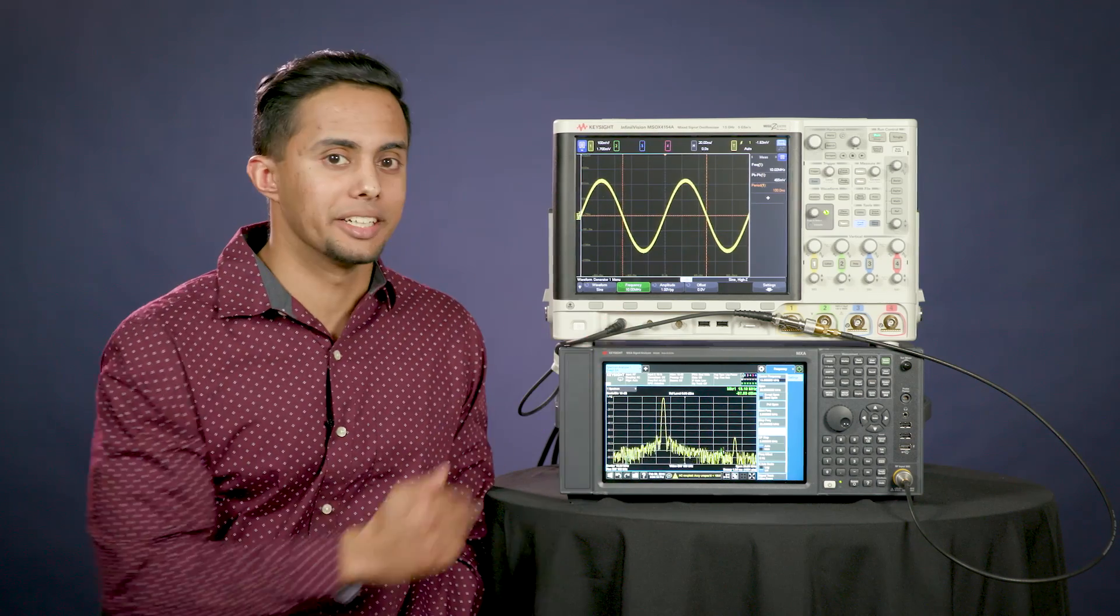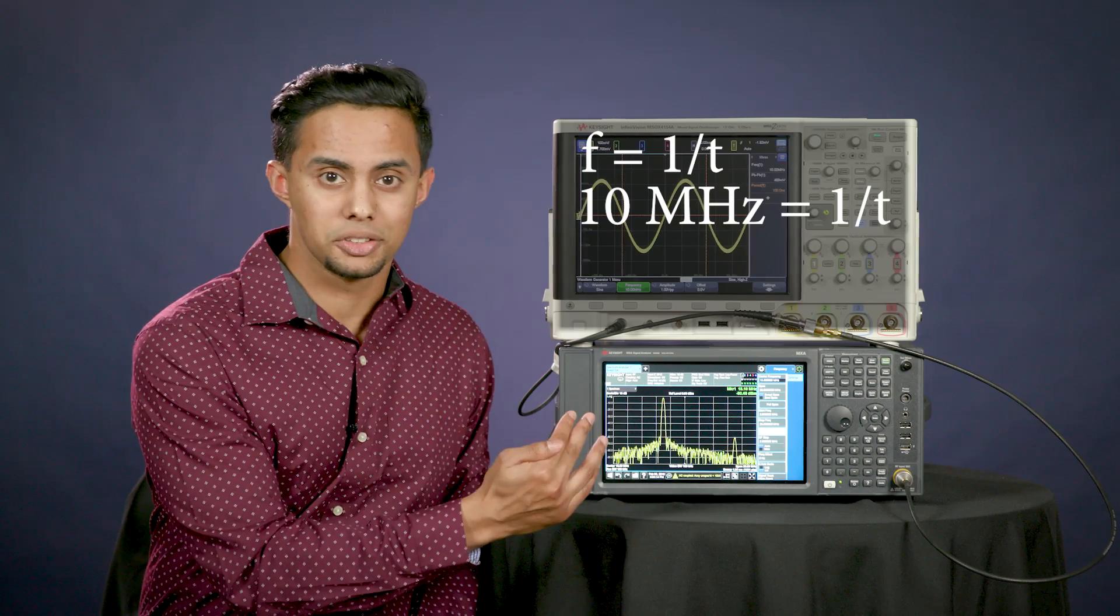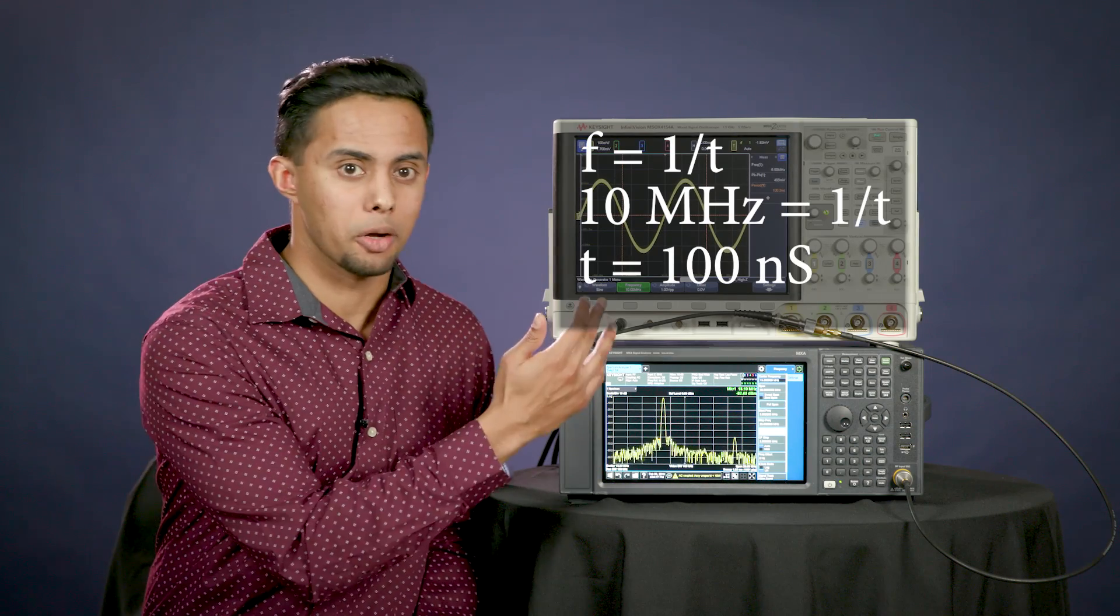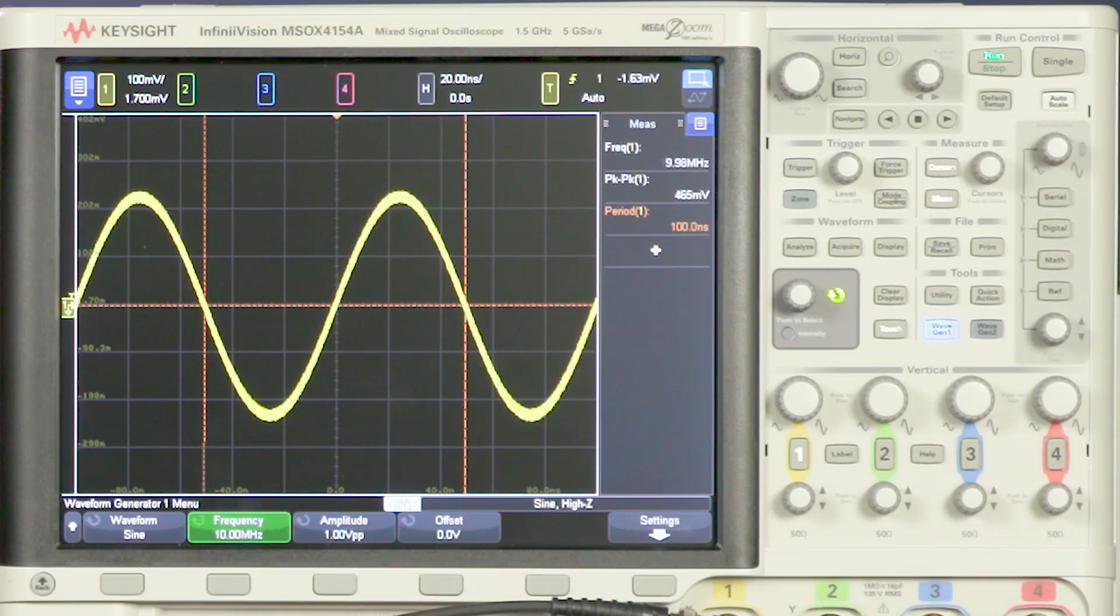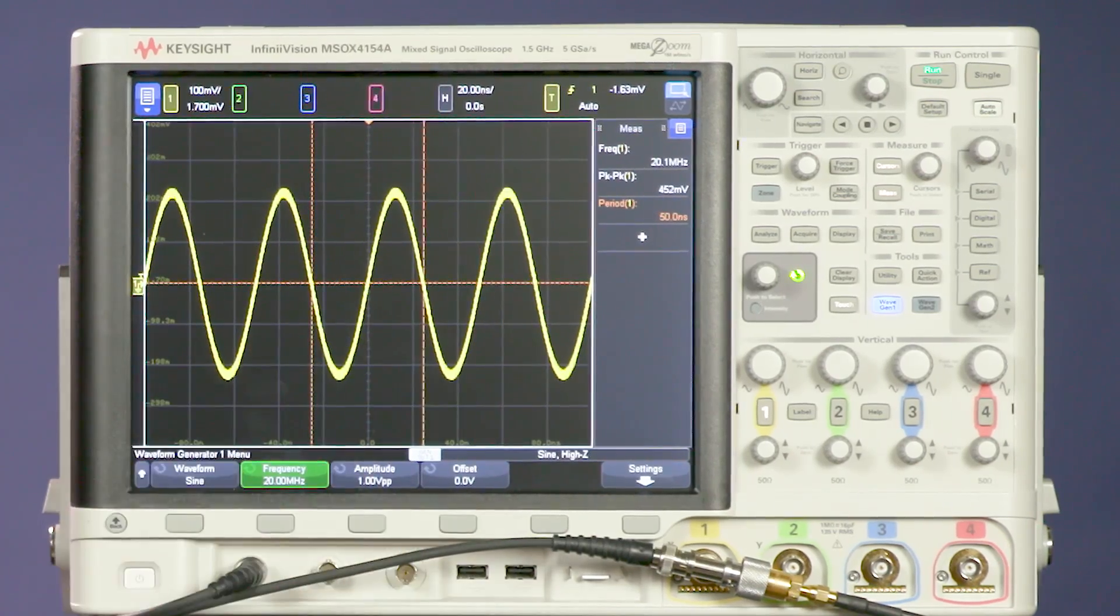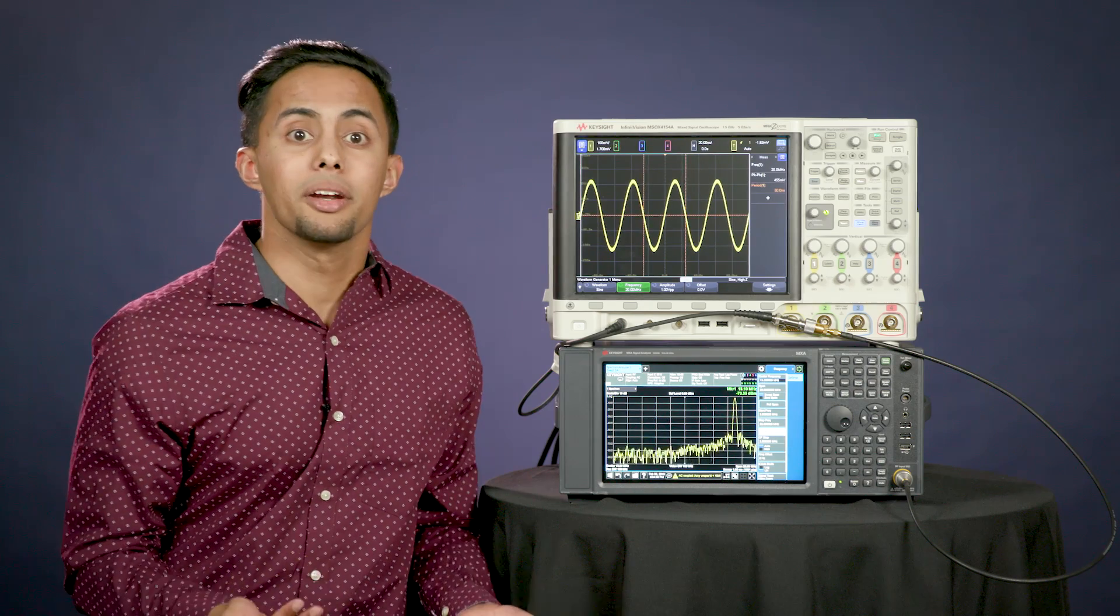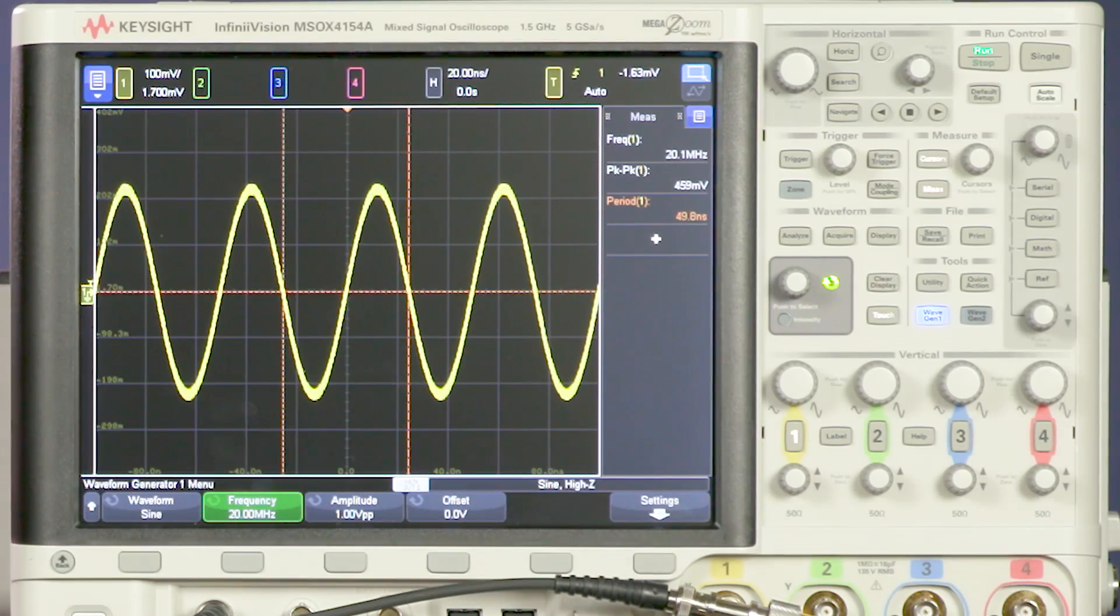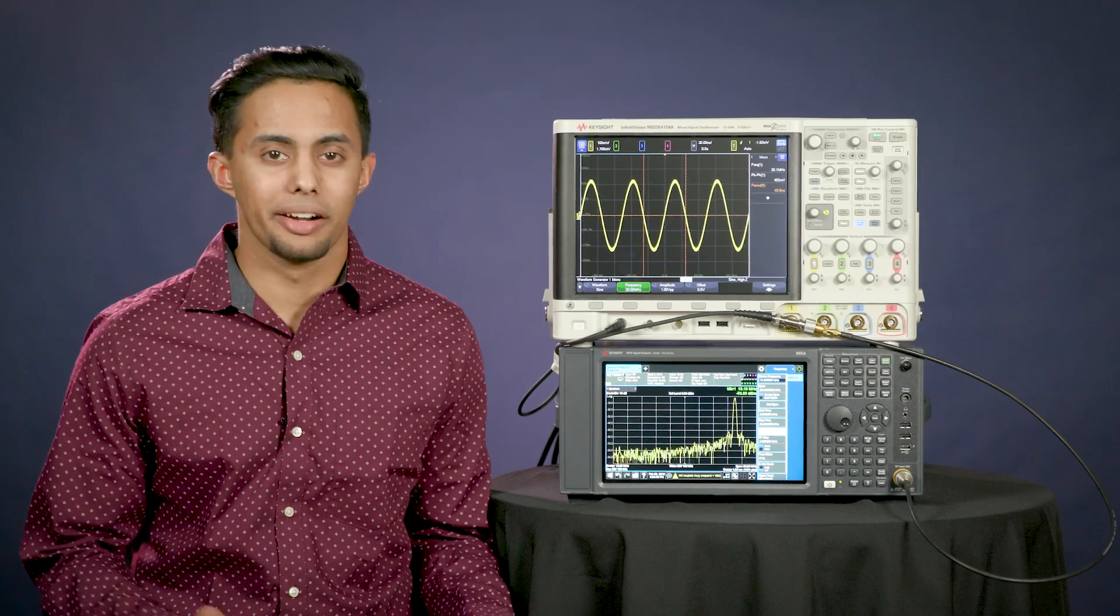Here we're outputting a 10 megahertz signal from the oscilloscope's waveform generator to channel one of the oscilloscope and visually this is how it appears on the oscilloscope as a sinusoidal waveform with a period of about 100 nanoseconds. Now if we were to adjust the output from the waveform generator to a 20 megahertz signal, then this is how it would look on the oscilloscope, once again as a sinusoidal waveform with a period of about 50 nanoseconds. Basically the higher the frequency the more waves we see in the same span on our oscilloscope.